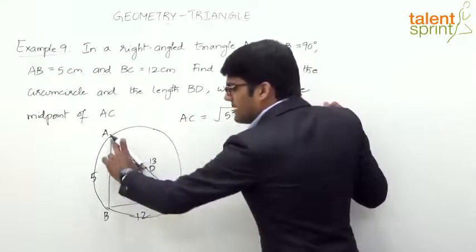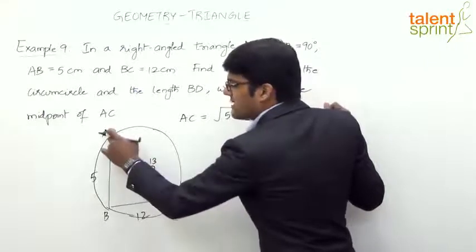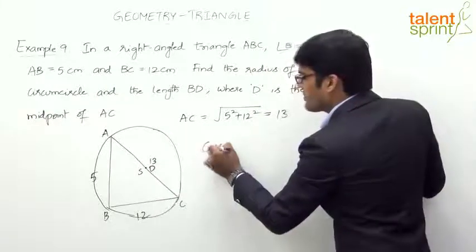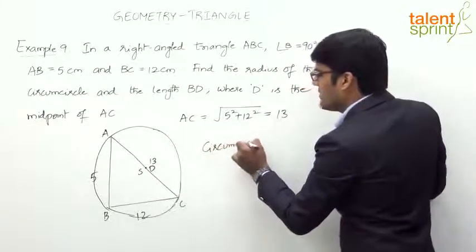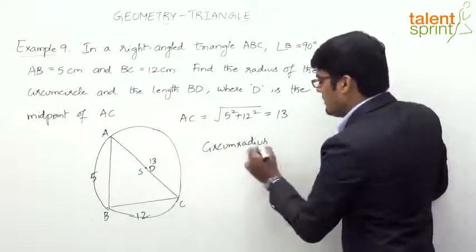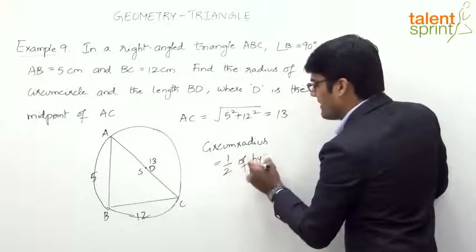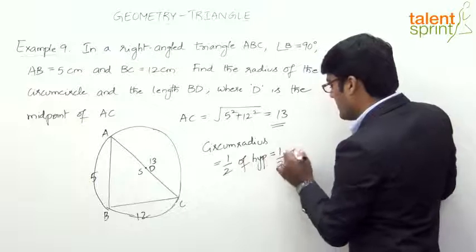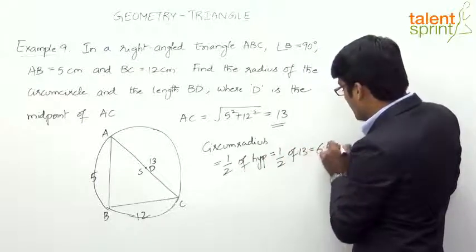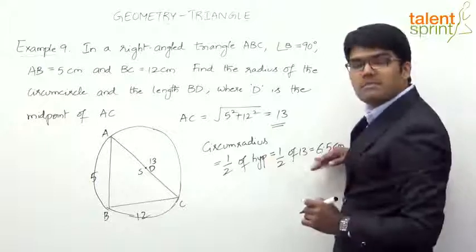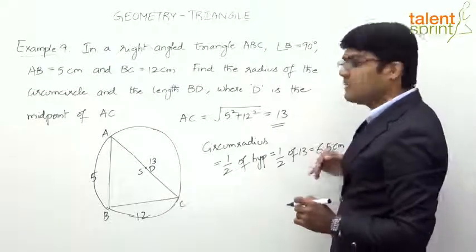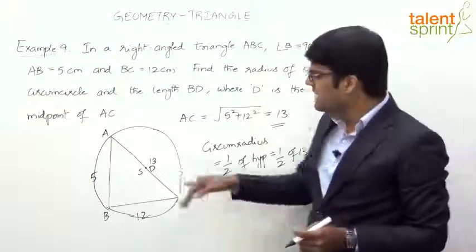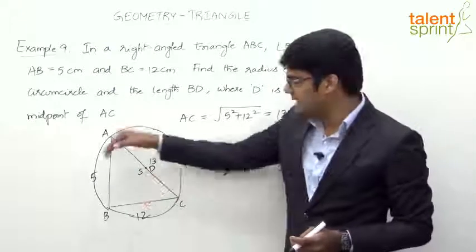The circumradius is nothing but half of the hypotenuse. From the center D to vertex A, and from the center D to vertex C, the distance is half of the hypotenuse. The hypotenuse is 13 centimeters, so half of 13 is 6.5 centimeters. Therefore, the radius of the circumcircle is 6.5 centimeters.